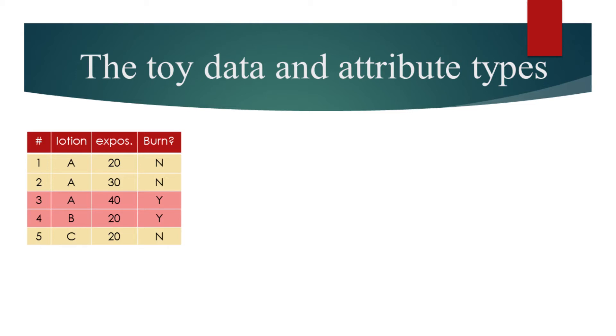Lotion is a nominal attribute. We can have a multi-way split where each outcome corresponds to the distinct value of the attribute, or we can have a binary split by grouping different values.